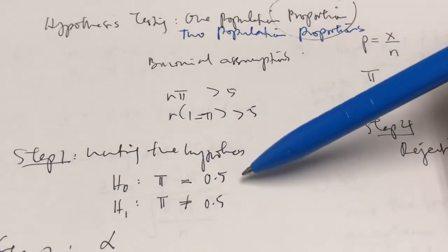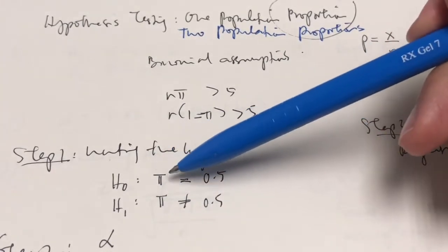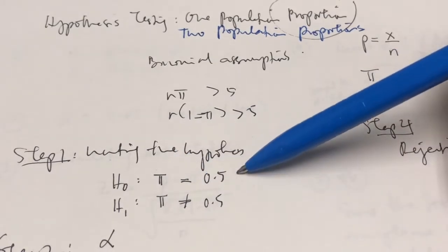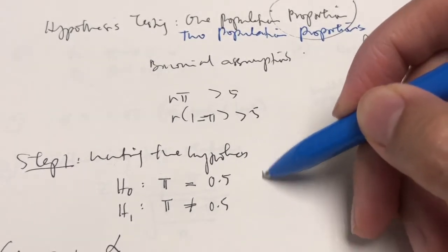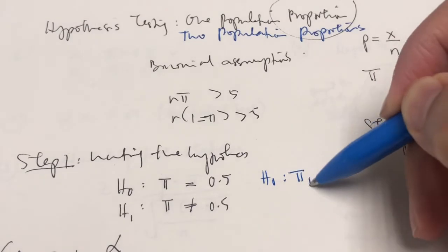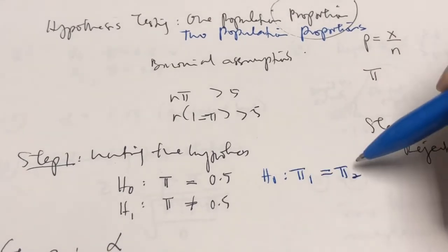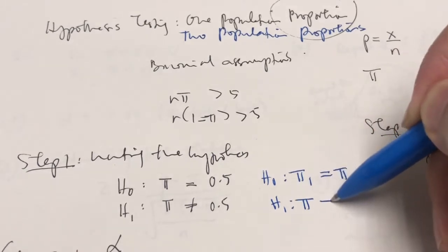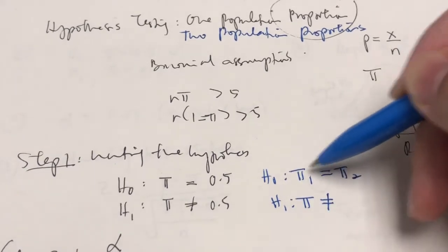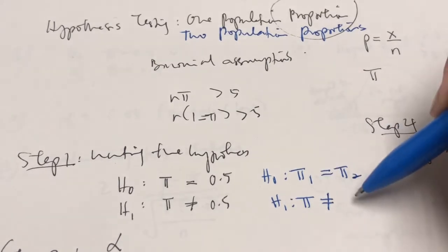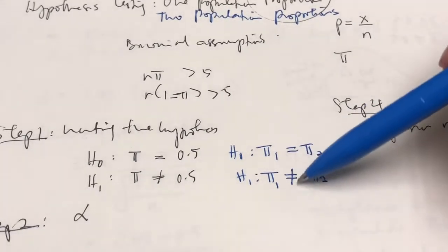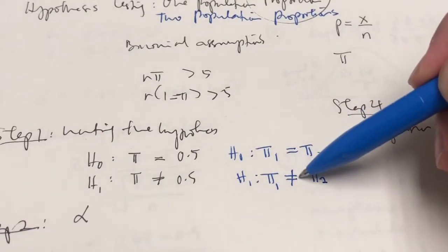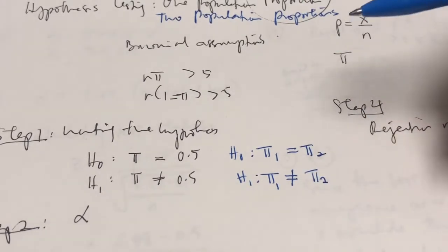Here is how we wrote the hypothesis for a one population proportion. As you can see, there's only one population proportion, and we test it against a hypothetical value. But this time, since we are testing two population proportions, we are comparing whether two population proportions are equal to each other or not. So the null hypothesis assumes they are equal to each other, and the alternate is they are not equal. Just like before, the sign of the alternate hypothesis can be either greater than or less than, depending on the context of the question.